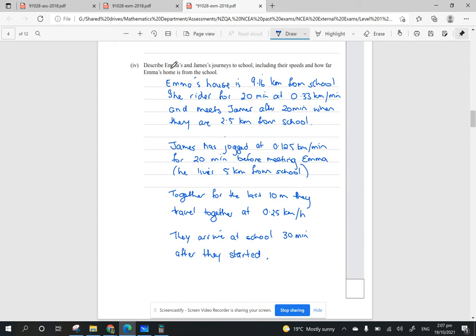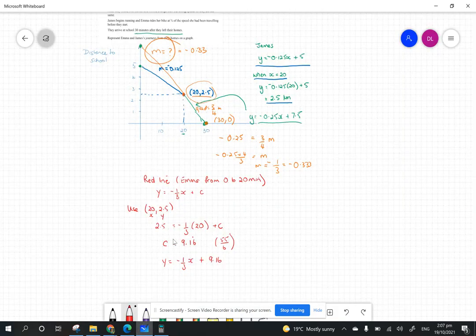The last one says describe Emma and James' journey to school including their speeds and how far Emma is from home. I started with Emma's house is 9.16 km from school. How do I know that? From the equation y = -1/3x + 9.16. The 9.16 is the y-intercept, which is that one there when Emma's riding to school.